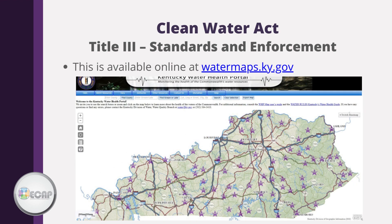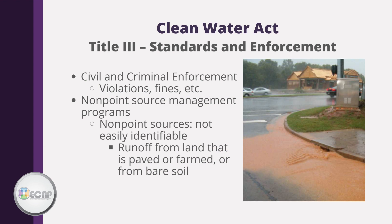The Division of Water has created an online portal where you can look up the health of any stream in Kentucky where applicable data is available. It also has useful features like being able to see if you are in a flood risk area or in a drought. The portal is available at watermaps.ky.gov. Title III also allows for the use of civil and criminal enforcement for water quality standard infractions, including violations and fines.